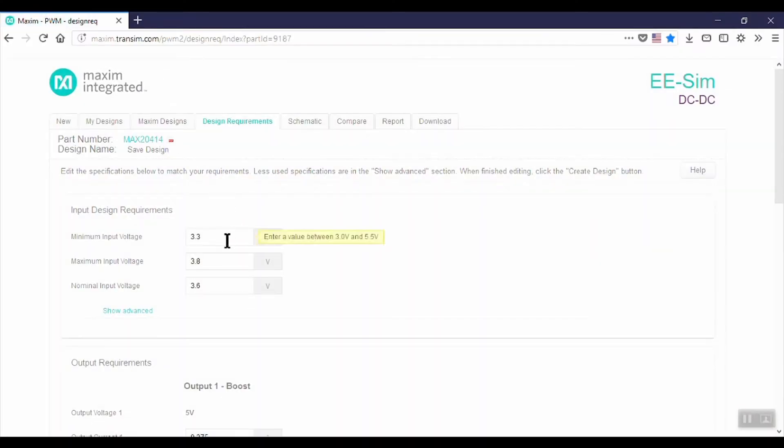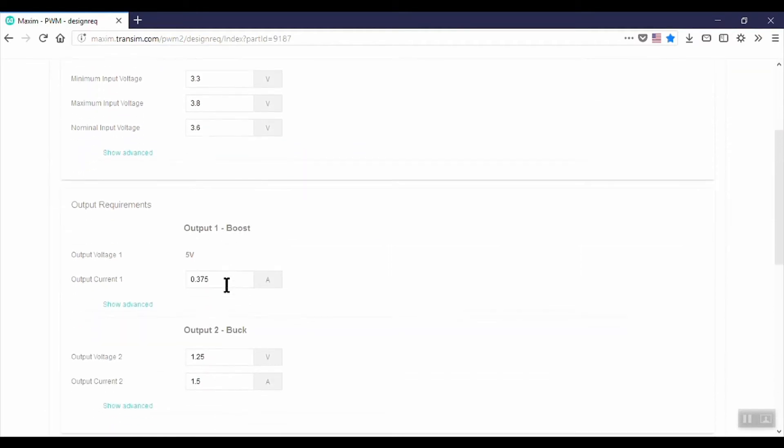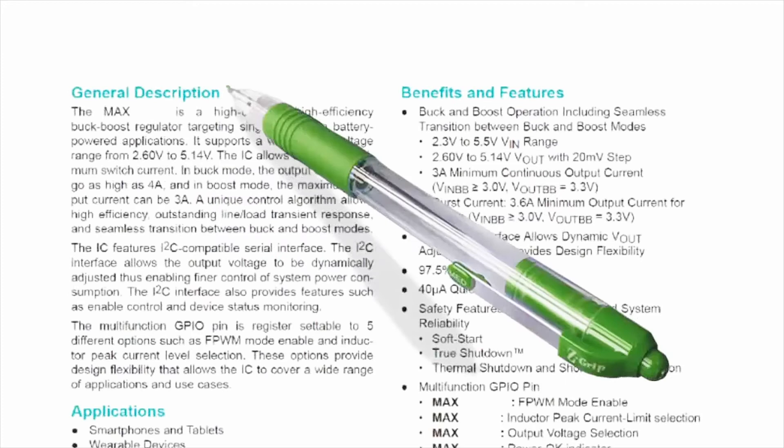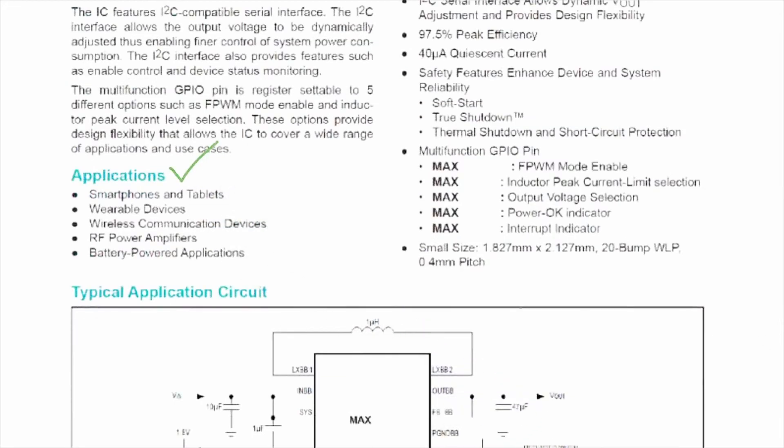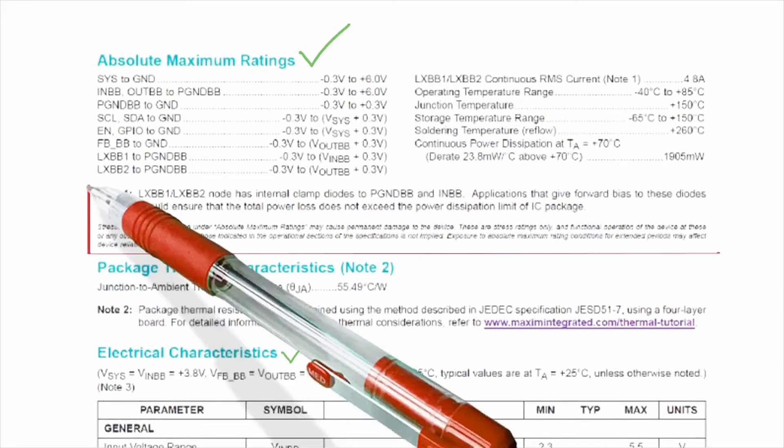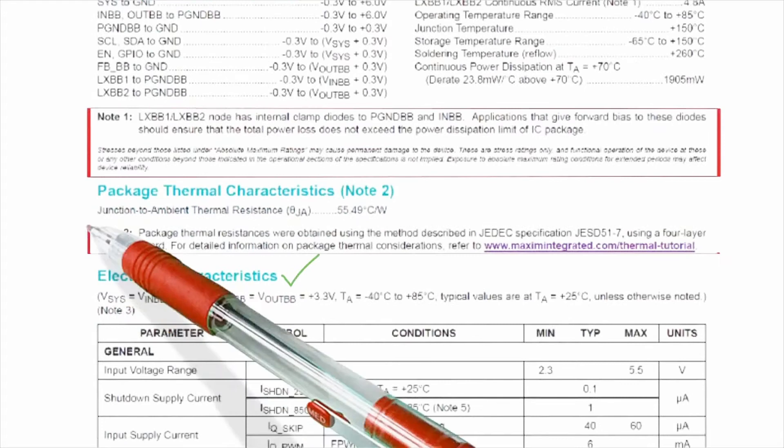The design requirements tab in eSIM embodies a live version of the particular part's datasheet. Of course, it's always recommended to review a part's datasheet to understand the electrical characteristics, absolute maximum ratings, and any particular precautions you need to account for when using the part.